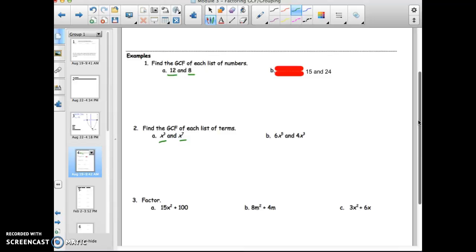x cubed and x to the seventh to be terms, and then down here in example three, fifteen x squared and a hundred to be terms. I need to find the greatest common factor if I was going to analyze this information between twelve and eight. So I have twelve and I have eight.